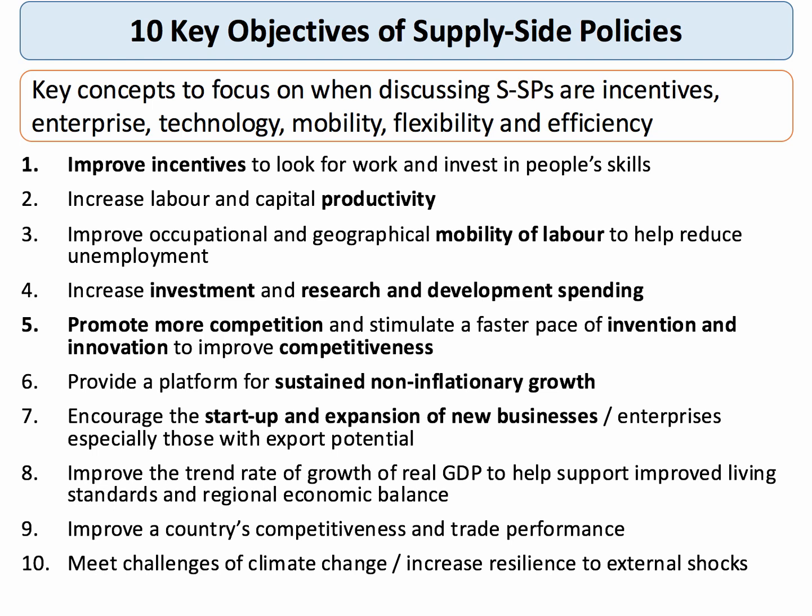Supply side policies aim over time to increase the quality of factors of production and thereby improve labour productivity. It's important in the modern labour market for workers to be both occupationally and geographically mobile to help reduce structural unemployment. Many supply side policies aim to increase the rate of capital investment in factories, new technologies, and also to lift the level of research and development spending. Some supply side policies focus on product markets designed to make them more competitive and more contestable, and therefore stimulate a faster pace of invention and innovation. If one gets the supply side right, the platform is built for sustained growth of GDP without necessarily causing inflation — economists call this non-inflationary growth.